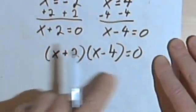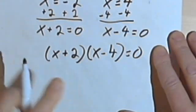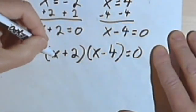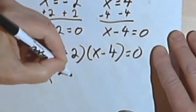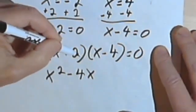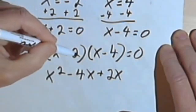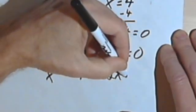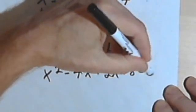And then instead of leaving that in factored form, I'm going to multiply it out to simplify it. So I'll have x times x is x squared, x times negative 4 is negative 4x, 2 times x is 2x, and 2 times negative 4 is negative 8, and that whole thing equals 0.